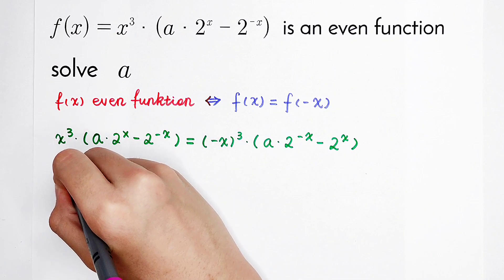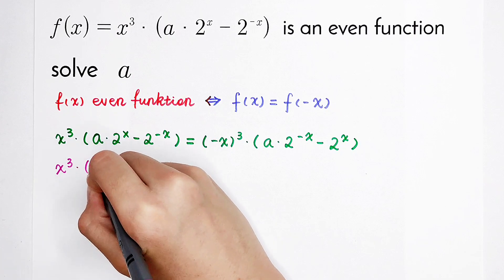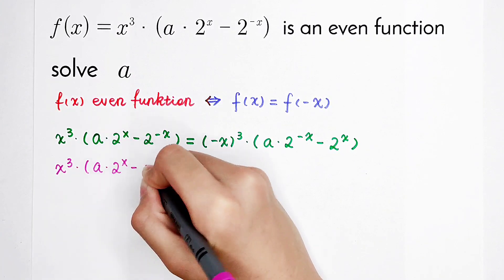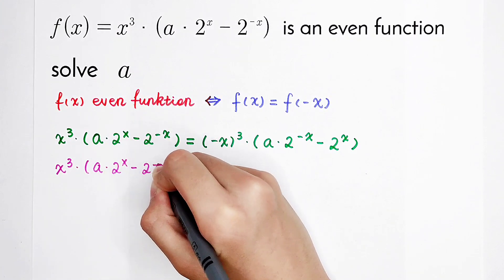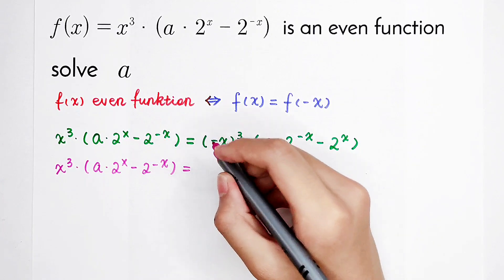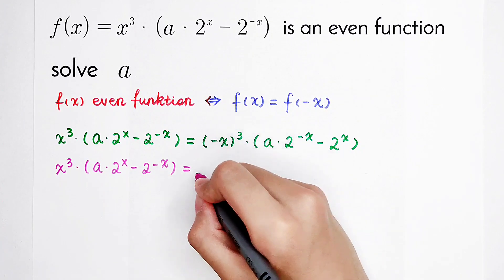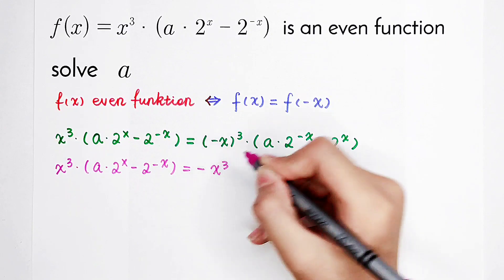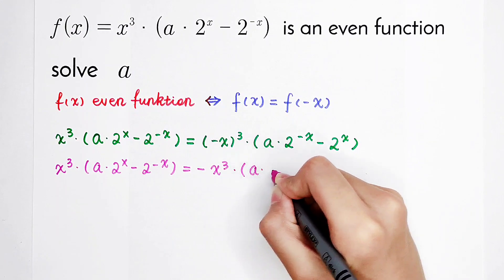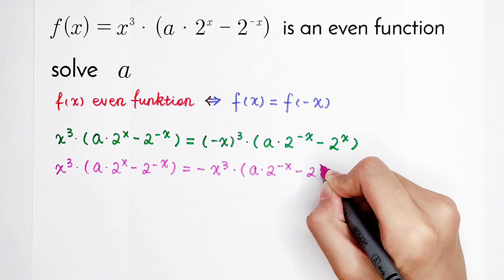Writing again: x cubed times bracket of a times 2 to the power x, minus 2 to the power minus x, is equal to minus x cubed times a times 2 to the power minus x, minus 2 to the power x.